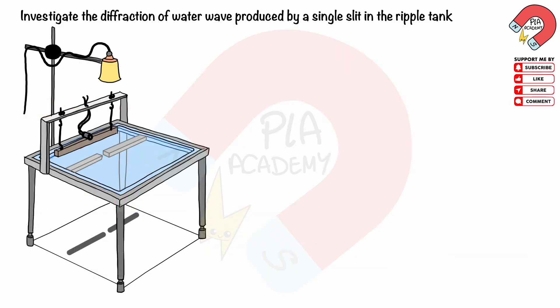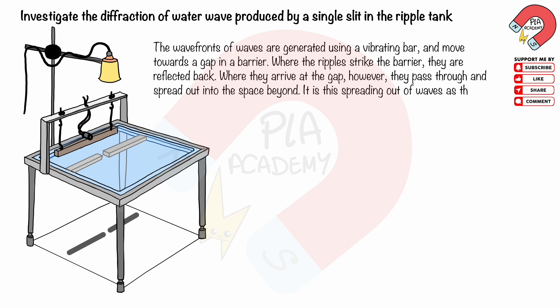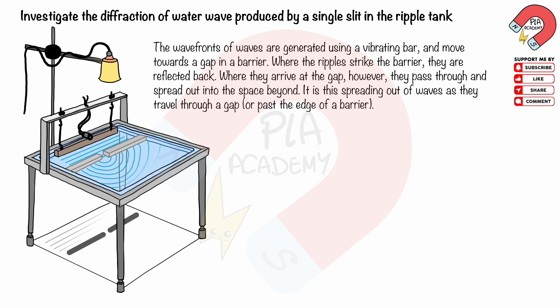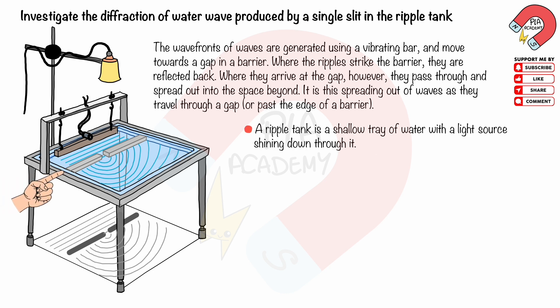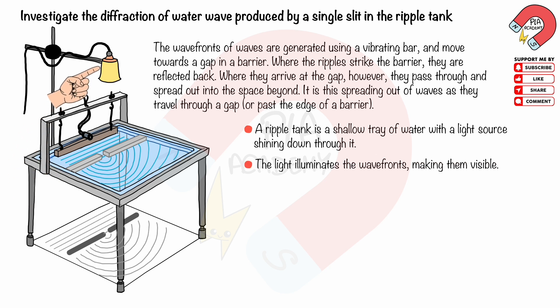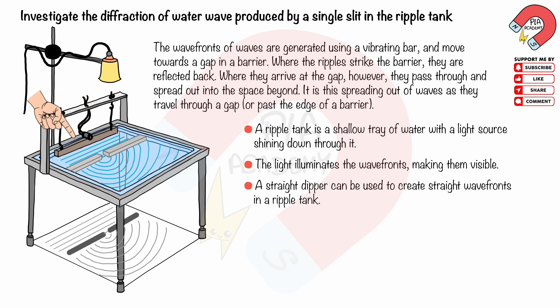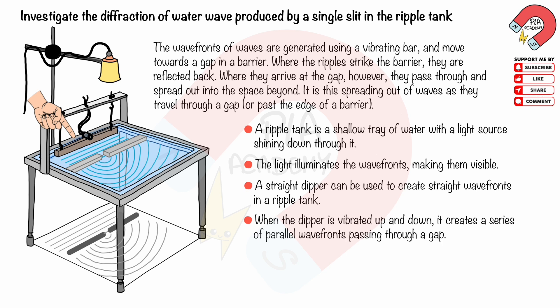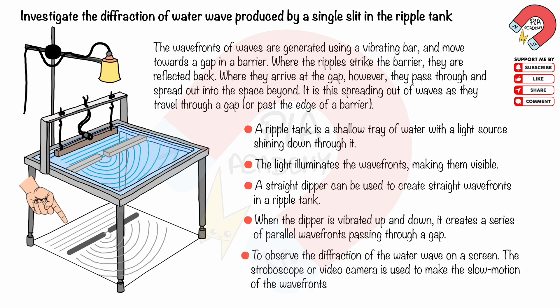To investigate the diffraction of water waves using a single slit in a ripple tank: wave fronts are generated using a vibrating bar and move towards a gap in a barrier. Where ripples strike the barrier they are reflected back, but where they arrive at the gap they pass through and spread out. A ripple tank is a shallow tray of water with a light source shining through it, illuminating the wave fronts. A straight dipper vibrated up and down creates parallel wave fronts passing through the gap. A stroboscope or video camera is used to observe the slow motion of wave fronts on a screen.